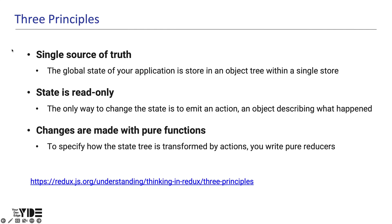What I just said is reflected in the three principles of Redux. The first is a single source of truth. The global state of an application is stored in an object tree within a single store. Because the state is stored in a single store, if you need multiple states in one widget, or need values from one state to another, you can easily access the state you need.